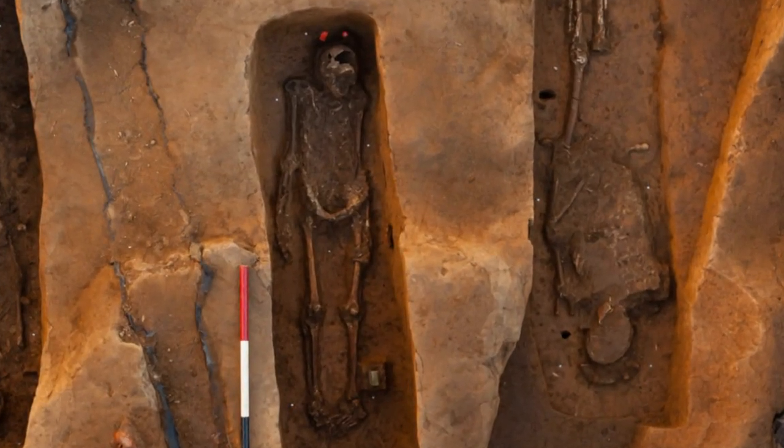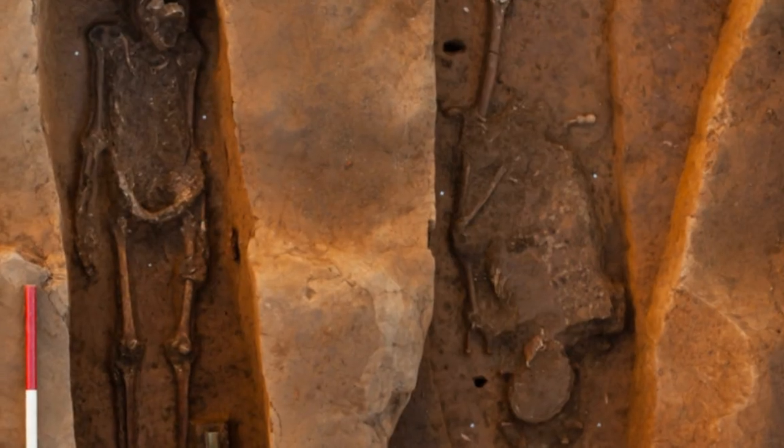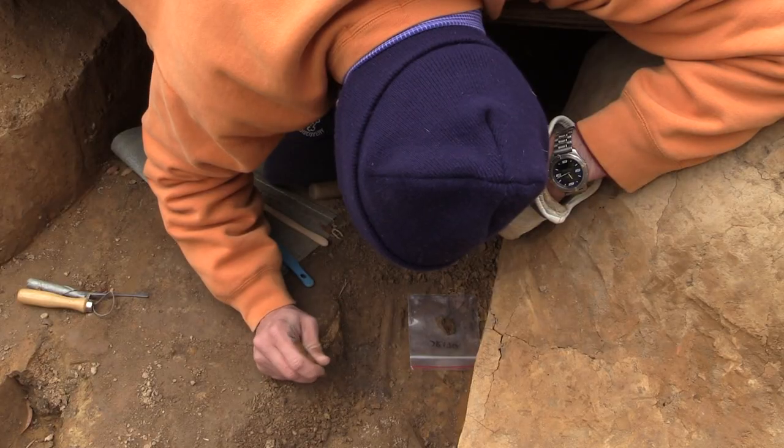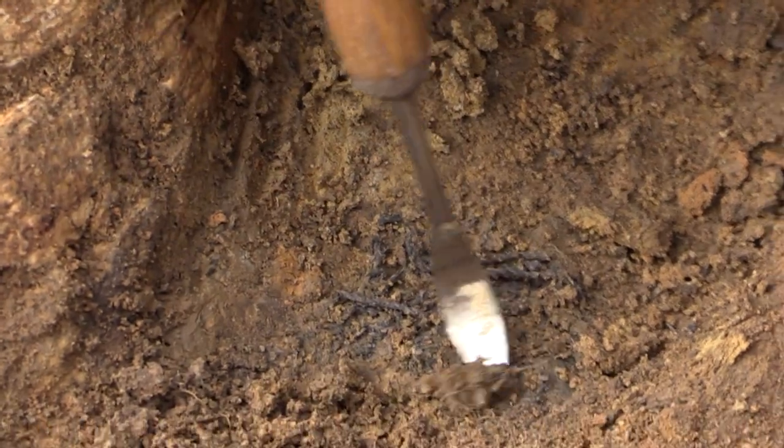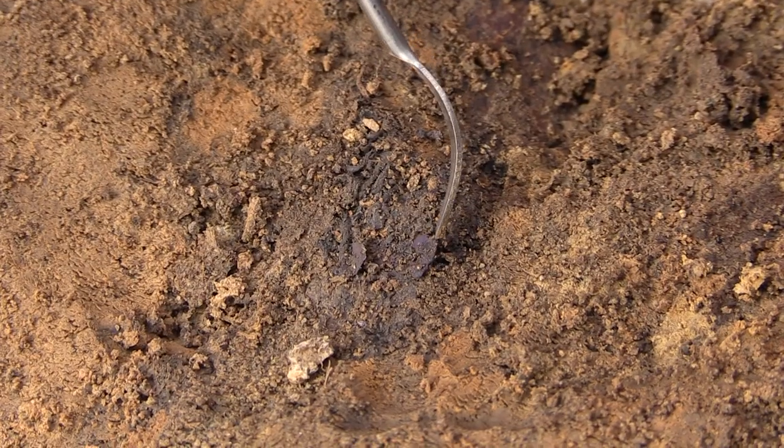The farthest south burial has some very interesting artifacts coming out of it, including a bunch of silver spangles that are all in situ and might be part of some clothing that was on top of this particular individual.